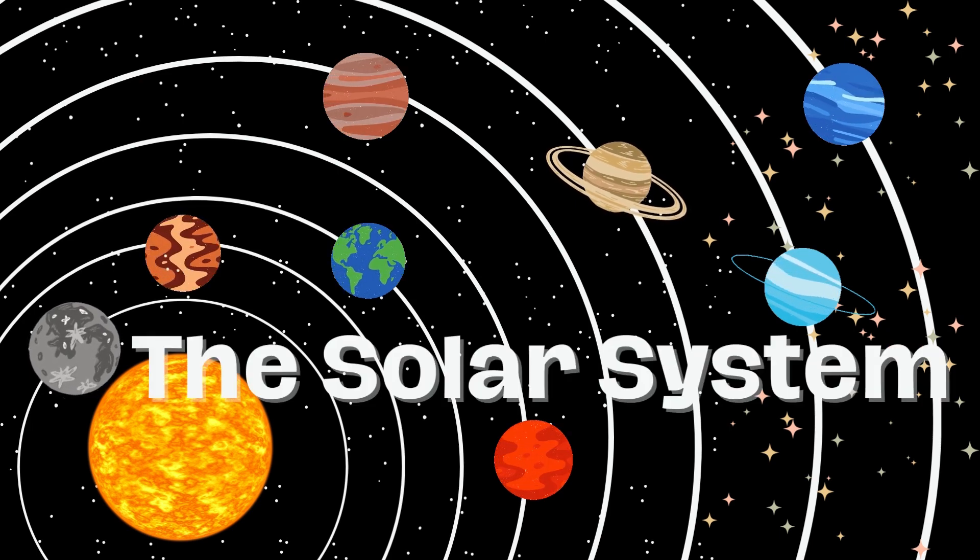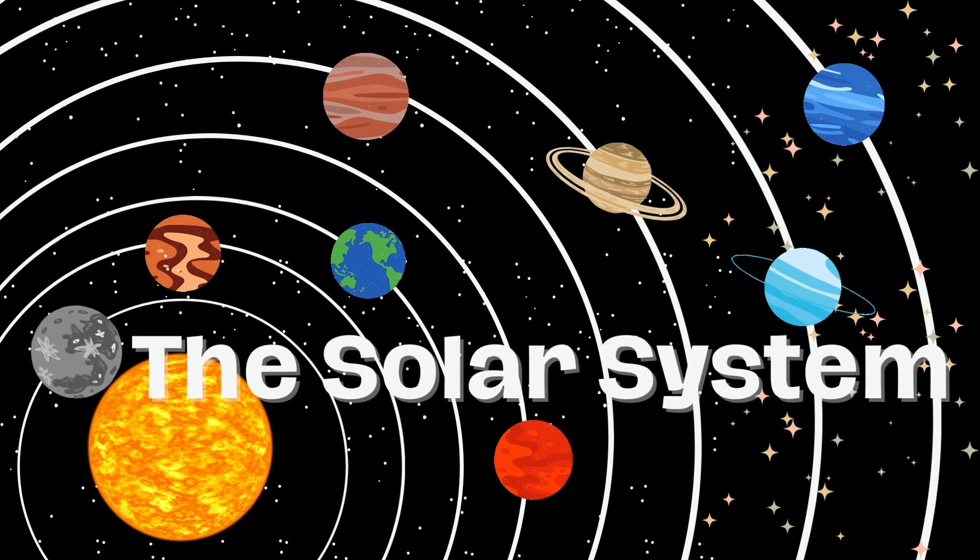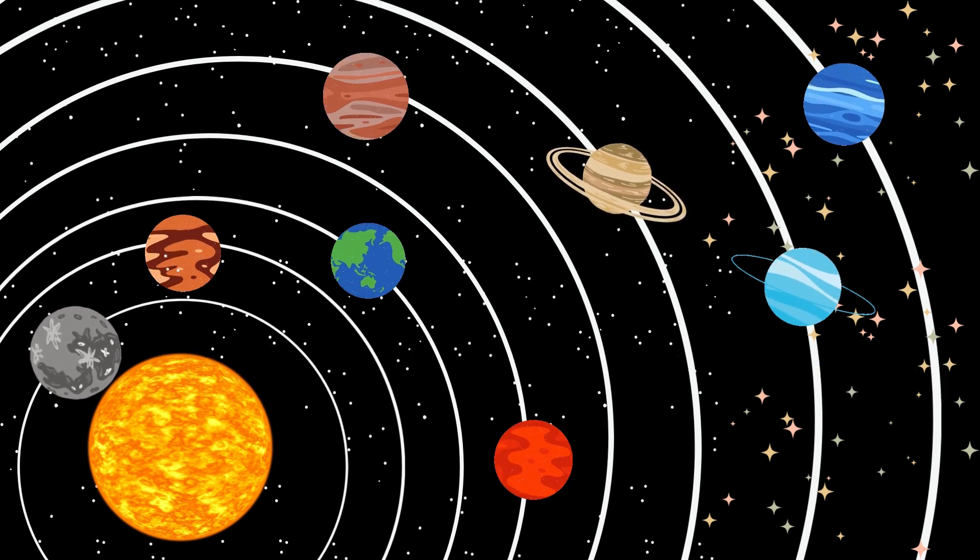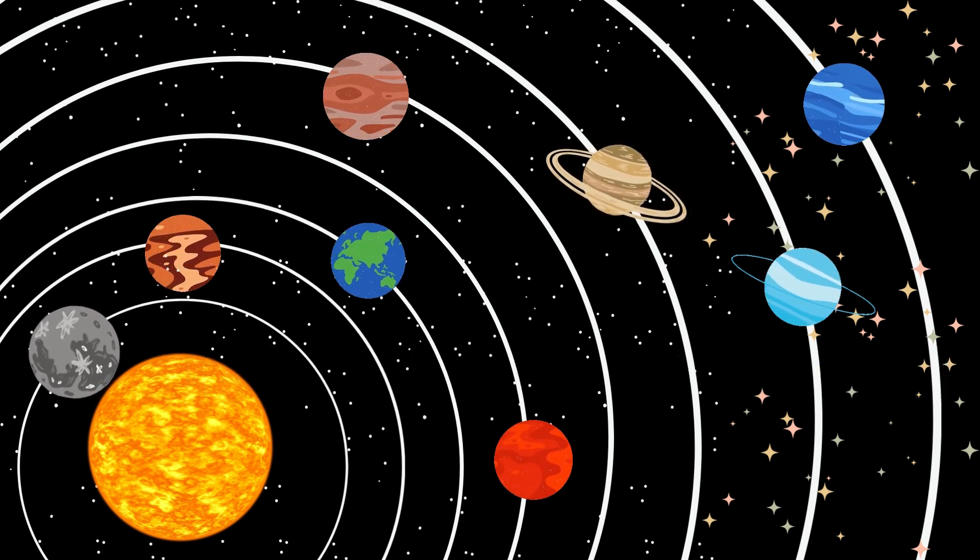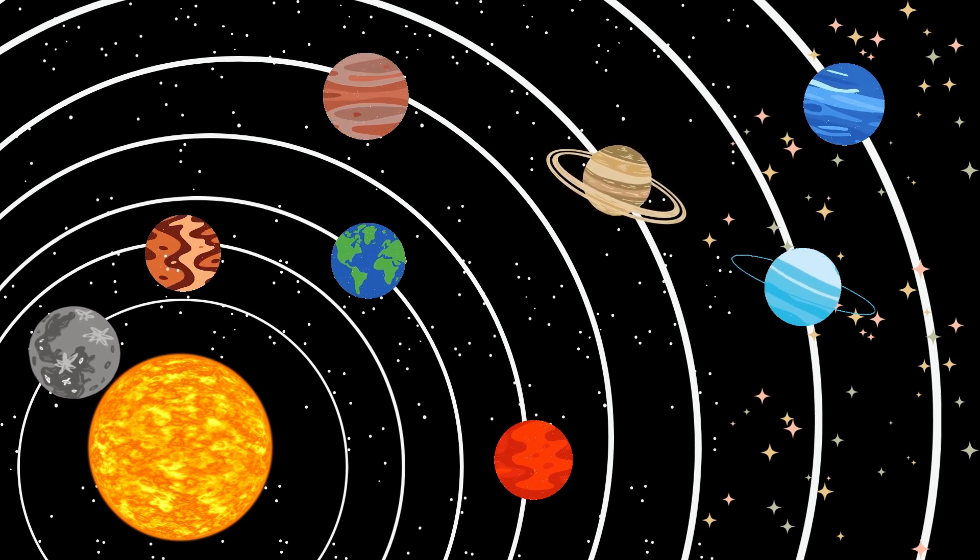The solar system is a vast place in space that consists of the Sun, planets, their moons, and many other objects like asteroids, comets, and more. It's like a big family of celestial bodies.